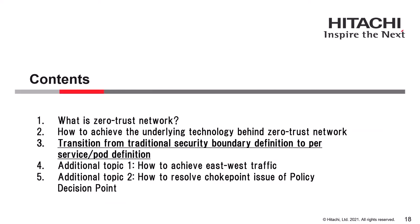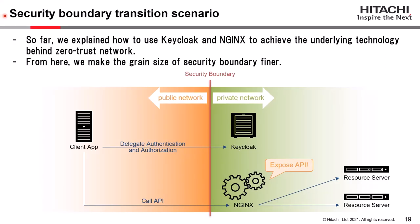So far, we can achieve the underlying technology behind the Zero Trust network with Keycloak and NGINX using the traditional API system. From here, we transit from traditional security boundary definition to per-service or per-pod definition. Compared to other services or products, Keycloak and NGINX can achieve this transition much more easily, and this is one of the main reasons why we selected Keycloak and NGINX.